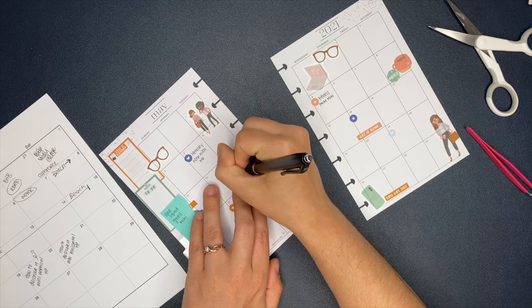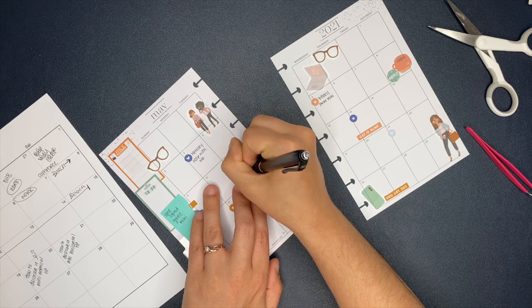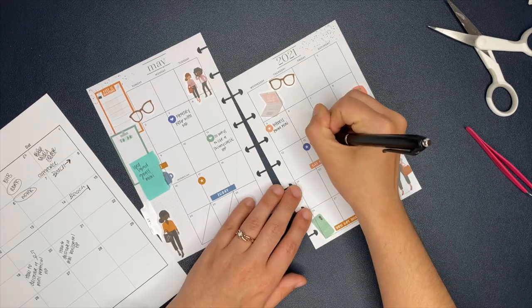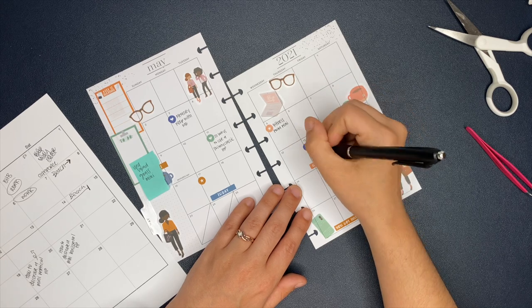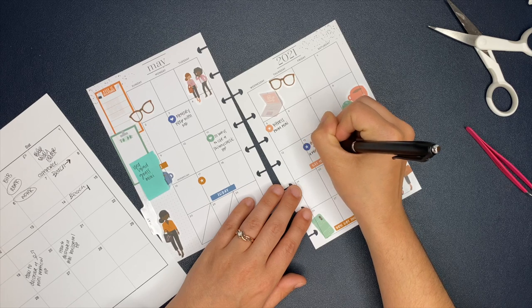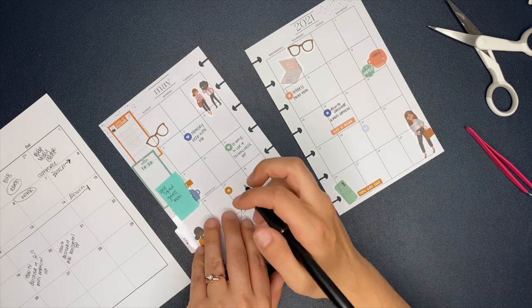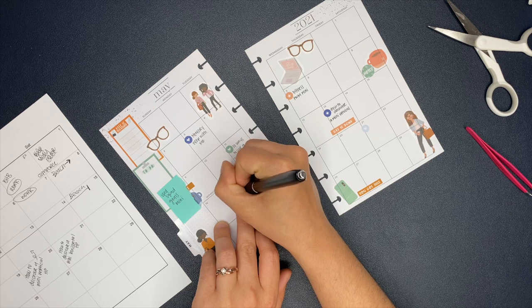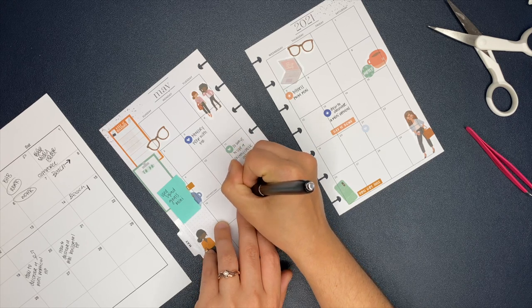Now the blue sticky note that you guys see there says used squad goals mini. And so that lets me know what sticker book I use. So when I come back, if I want to add videos to this, if I want to decorate a little bit more or whatever, I know what sticker book I used. And then at the end of the month, I just take that sticky note off and I pitch it. And I do that for all my monthly spreads. So if I need to come back, if I'm changing videos out, rearranging things in my planner and the monthly section, I know what stickers to grab.